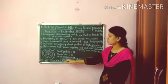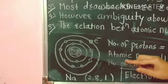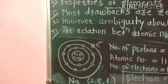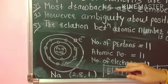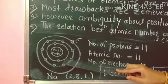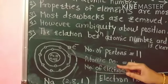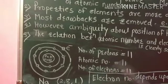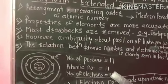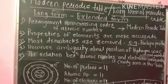The electronic configuration of sodium is 2, 8, 1. In the atom of sodium, there are 2 electrons in the first orbit, 8 electrons in the second orbit, and 1 electron in the third orbit. The number of protons, the number of electrons, and the atomic number are all the same — that is, 11.